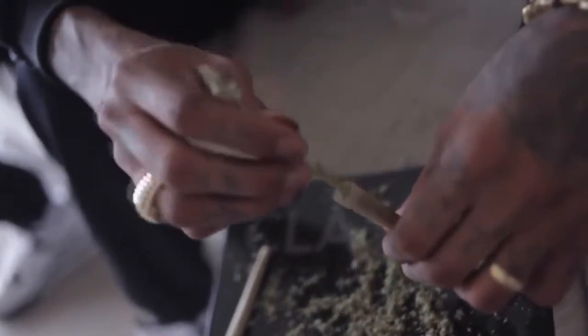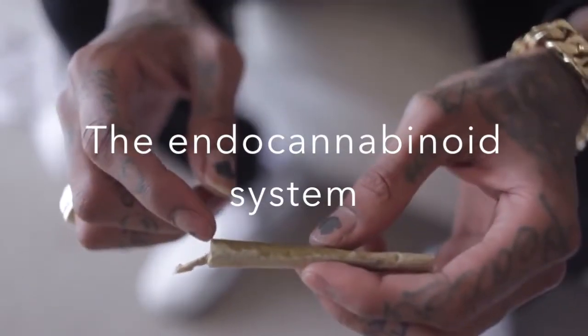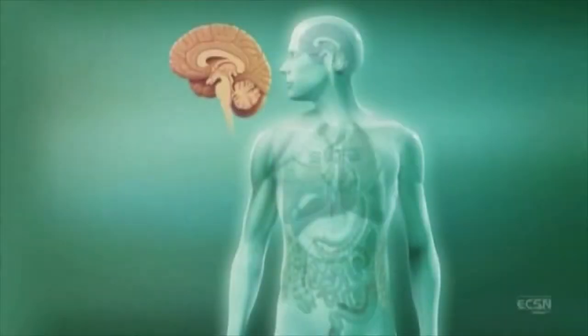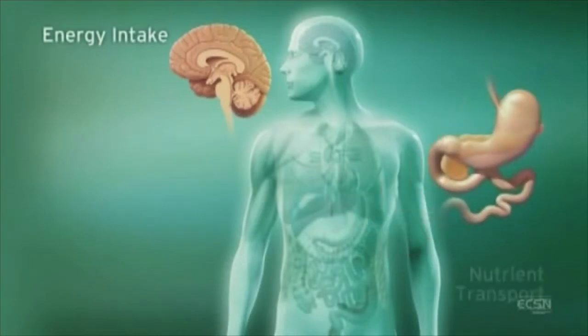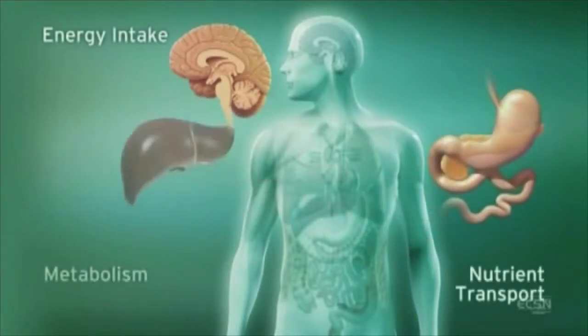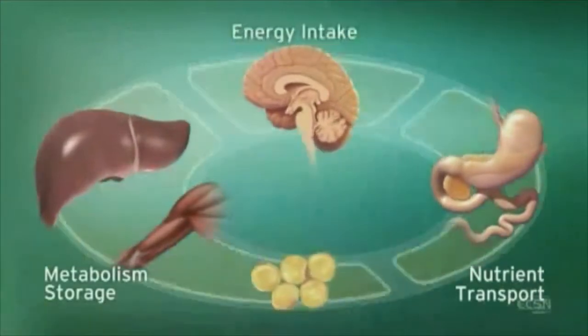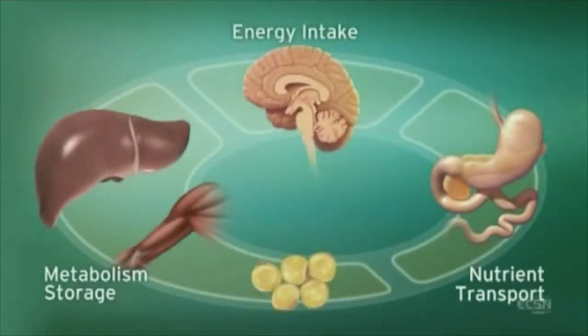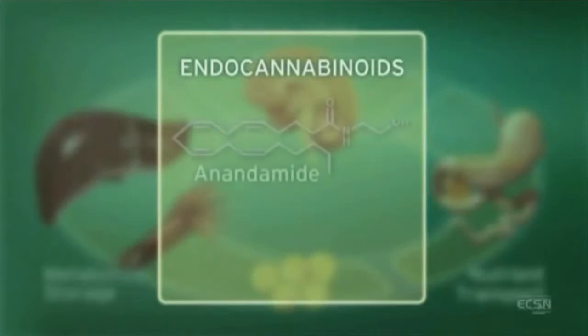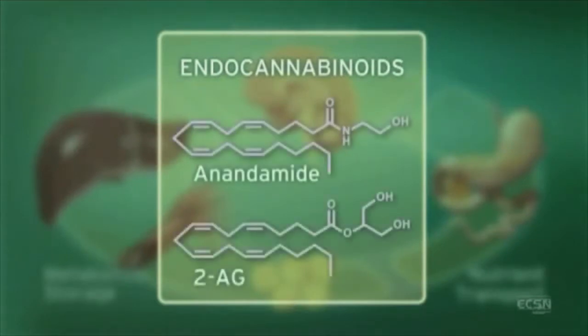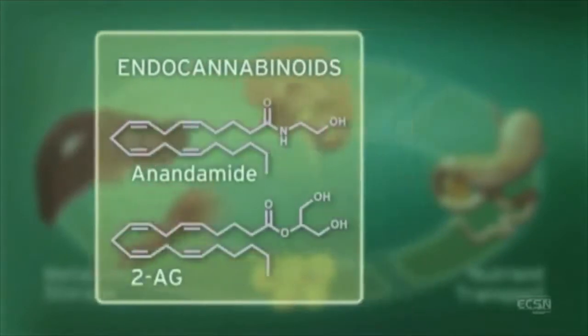As amazing as this sounds, everyone is born with cannabis-like substances. It's called the endocannabinoid system. The endocannabinoid system is responsible for energy intake and storage, nutrient transport and metabolism, as well as pain sensation and appetite. These are modulated via endocannabinoid ligands, primarily anandamide and 2-arachidonyl glycerol, or 2-AG.